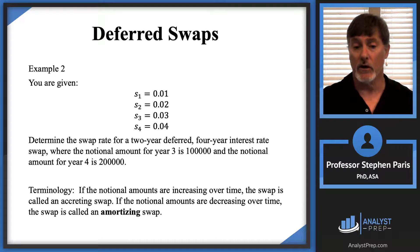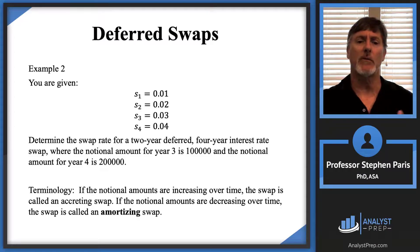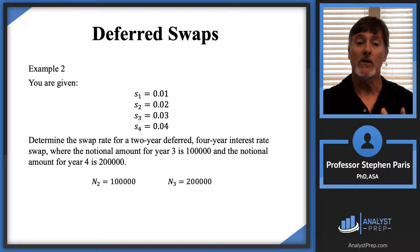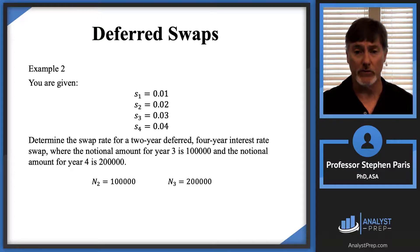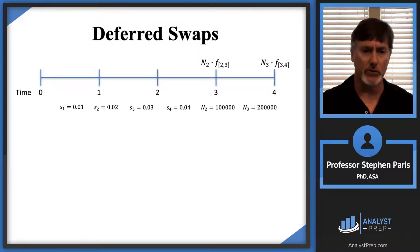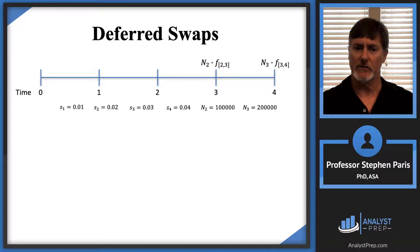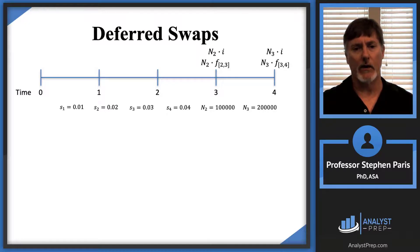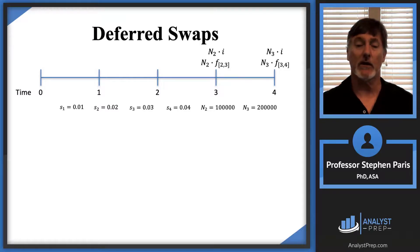So the notional amount at time two is 100,000, and the notional amount at time three is 200,000. I'll set this up on a timeline symbolically first. This is a two-year deferred four-year interest rate swap, so the interest swaps take place at years three and four. I'm going to trade those interest payments — based on forward rates — for payments based on a fixed interest rate I.